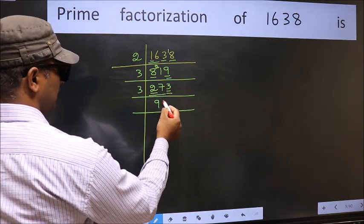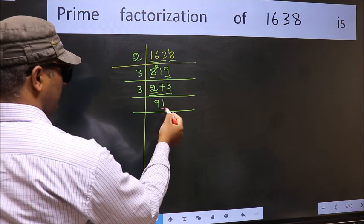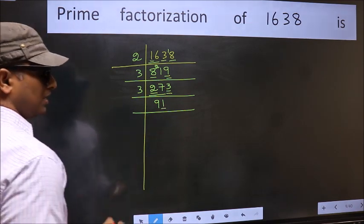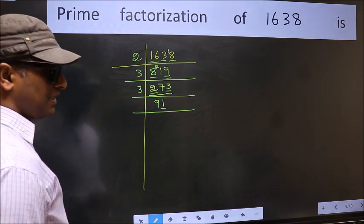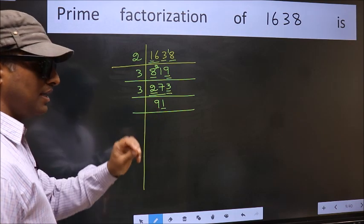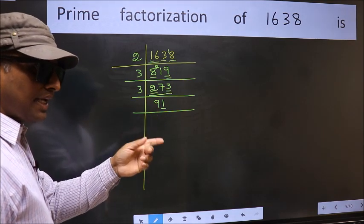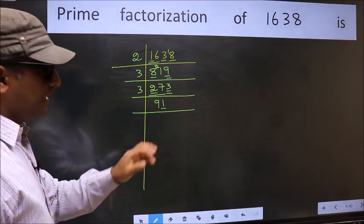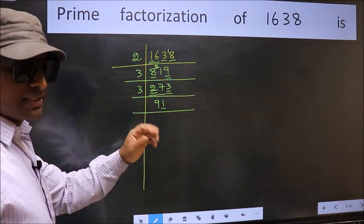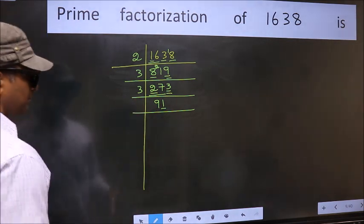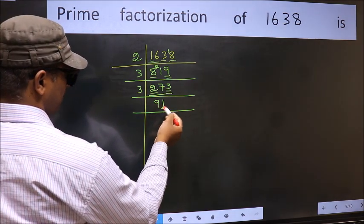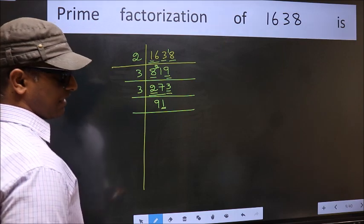When do we get 3 in the 3 table? 3 ones are 3. So 273 ÷ 3 = 91. Now the last digit 1 is not even, so not divisible by 2. To check divisibility by 3, add the digits: 9 plus 1 equals 10, and 10 is not divisible by 3. So 91 is not divisible by 3. Next prime number 5: the last digit is neither 0 nor 5, so this is not divisible by 5.